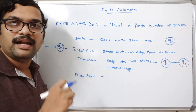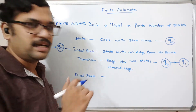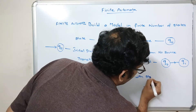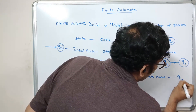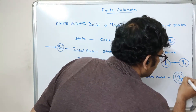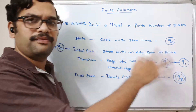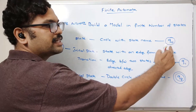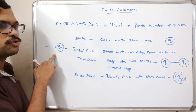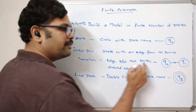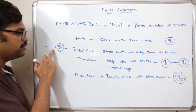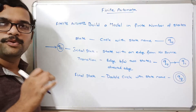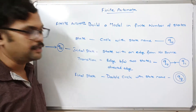A final state is generally represented as a double circle with a state name — for example, QF represented as a double circle. So to summarize: a state is represented as a circle with the state name; an initial state is a circle with an edge from no source; a transition is a directed edge between two states, meaning we give an arrow mark to show the direction of flow, implying the process changes from one state to another for every input symbol over the alphabet. And the final state is a double circle, for example QF.